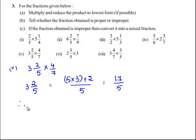Therefore the expression becomes 17/5 multiplied by 4/7. The product of two fractions is equal to the product of its numerators divided by the product of its denominators.